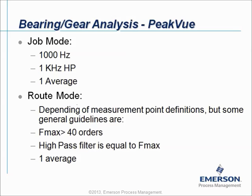If you collect peak view data starting from the route mode, it will depend on the measurement point definitions, but here are a couple of general guidelines. It is recommended to use an Fmax of at least 40 orders or higher, and the high pass filter is normally more or less equal to the Fmax. So if your Fmax is 1000 Hz, the high pass filter will be 1000 Hz; if the Fmax is 2000 Hz, the high pass filter will be 2000 Hz. In peak view measurements, very importantly, we always collect only one average.